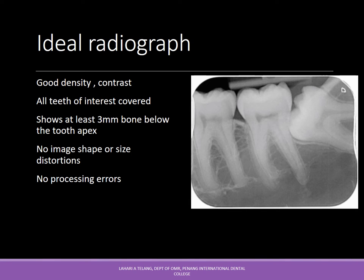Based on all the characteristics discussed and projection geometry, an ideal radiograph has good density and contrast, covers all teeth of interest, shows at least 3 mm of bone below the apex of the tooth to identify any periapical pathology, has no image shape or size distortion, and has no processing errors.